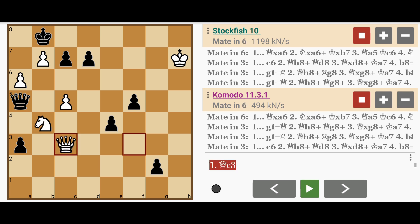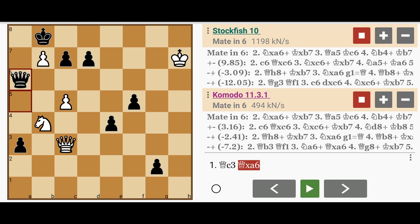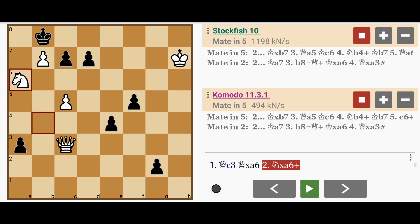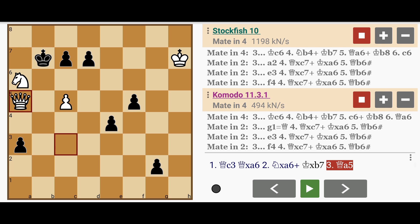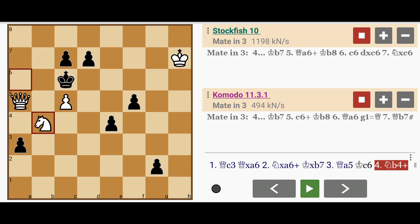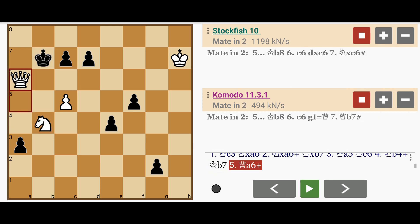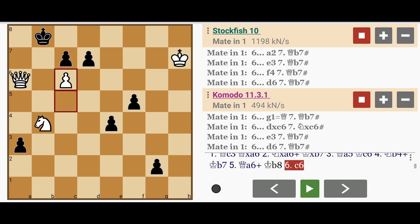Faster might be queen to c3, a mate in 7: queen captures a6, knight captures a6, king captures b7, queen to a5, king to c6, knight b4 check, king to b7, queen to a6, king to b8, c6.